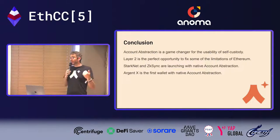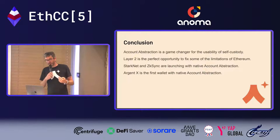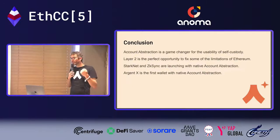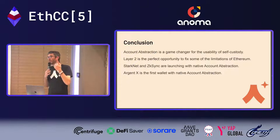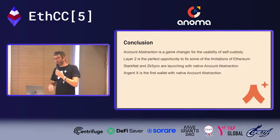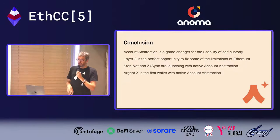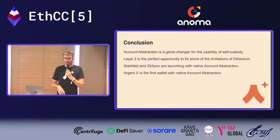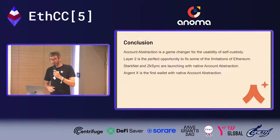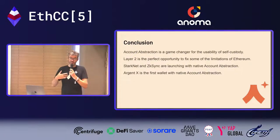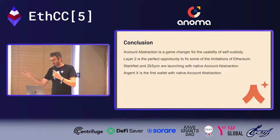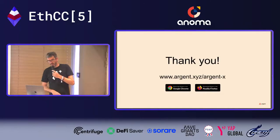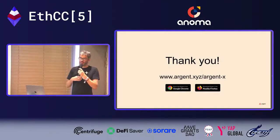In conclusion, account abstraction is a game changer for the usability of self-custody and the only way to scale it — which we desperately need. Without it, users will continue to rely on centralized parties. Layer 2 is a great opportunity to fix this. We're very lucky that StarkNet and ZK-Sync launched with native account abstraction, and we should lobby other L2s to adopt it. ArgentX is the first wallet with native account abstraction — I encourage you to give it a try.